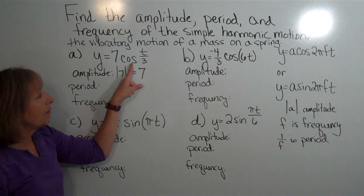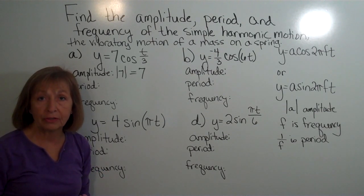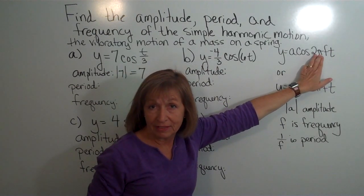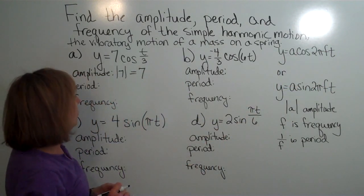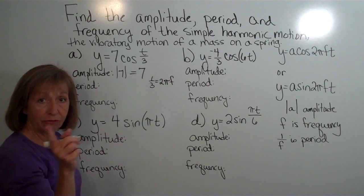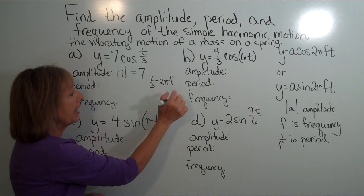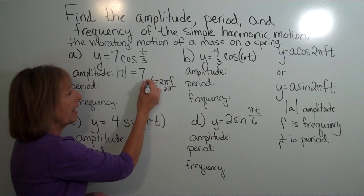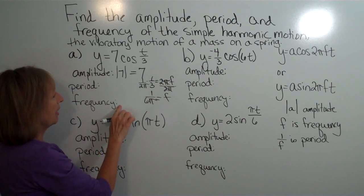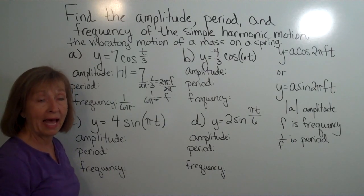For this cosine of t over 3, think of t divided by 3 as one-third times t. That one-third coefficient in front of t must equal the full coefficient from the model, which is two pi f. So we set one-third equal to two pi f, then divide both sides by two pi. Dividing by two pi is like multiplying by one over two pi, giving us a frequency of 1 over 6 pi. The period is just the reciprocal of that, so when we reciprocal 1 over 6 pi, we get 6 pi.